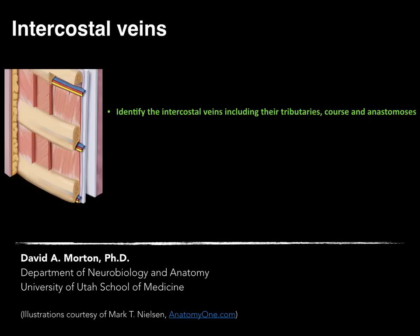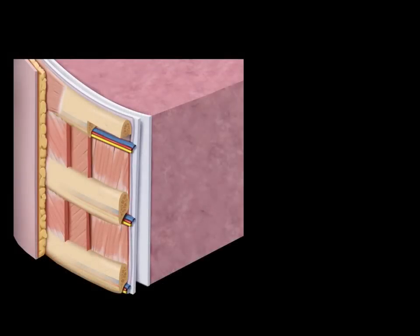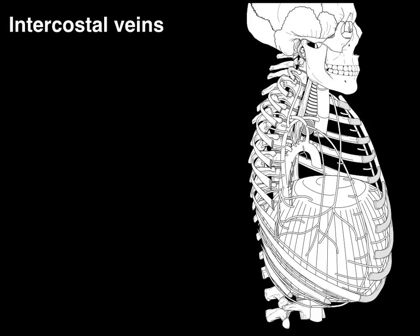Here we have a picture of a section of the thoracic wall, and there we have an intercostal vein. We're going to discuss how you get blood from this intercostal vein back to the heart. Here we have a lateral view on the right side of the thoracic wall, and we're going to talk about intercostal veins, which segmentally drain tissue from intercostal spaces and the overlying skin.